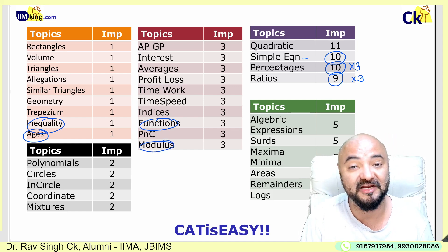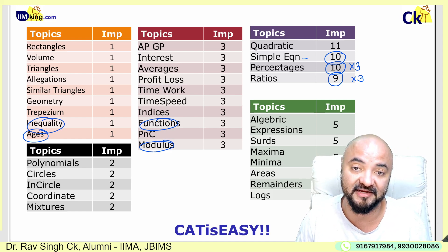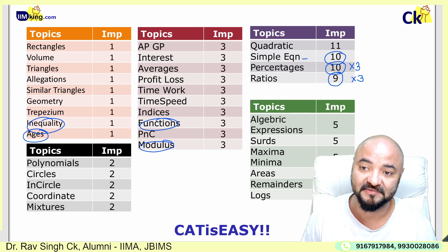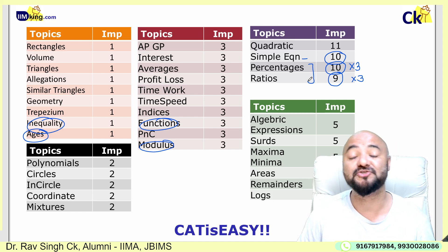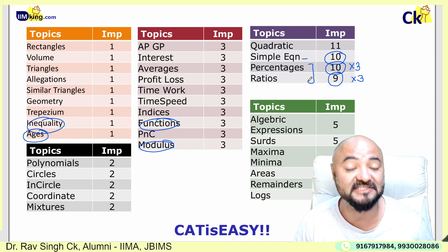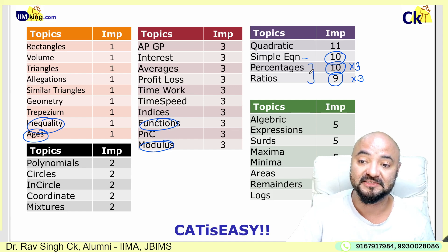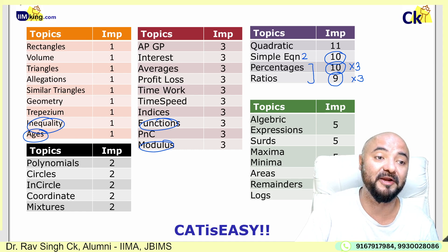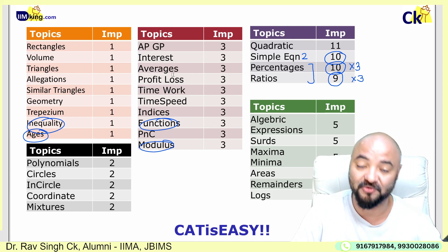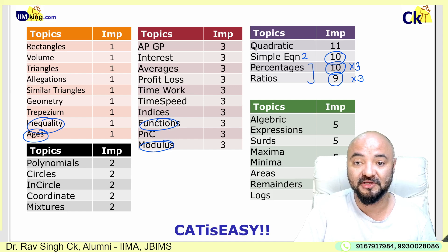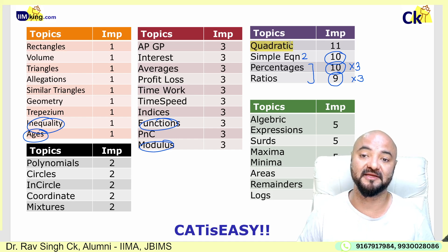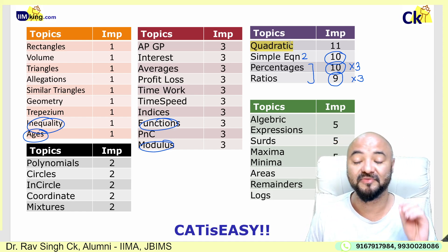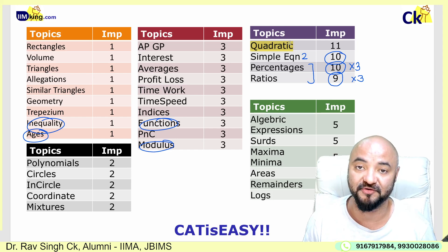This is the main fundamental problem — why people get scared of the CAT exam: 3-4 concepts combined into one question. Percentage and ratio, which was historically number one in the last 2-3 years, has been reduced in rank. Simple equation is now the second most important topic. Rank 1 goes to quadratic equations. Open any CAT 2024 paper — you'll see quadratic equations all over. Almost 4 questions in every slot had quadratic equations used somewhere or the other.